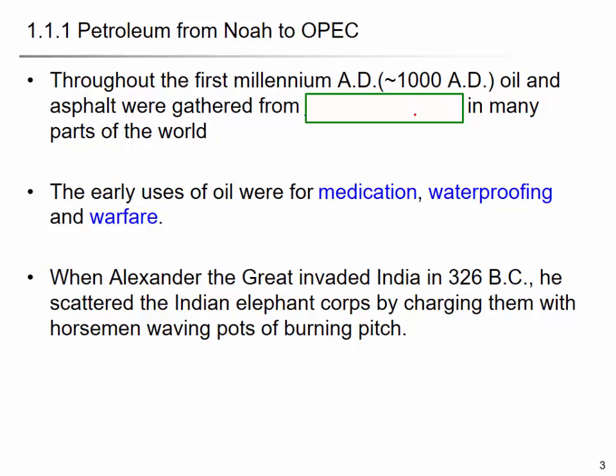Throughout the first millennium, asphalt and oil were gathered from natural seeps in many parts of the world — surface oil. If you go somewhere in the mountains, you find oil shale, tar sand, or asphalt at the surface and extract it for medication and waterproofing for boats. In some cases they used it to make fire for warfare — for example, Alexander the Great scared Indian elephants by charging them with horsemen waving burning pits.